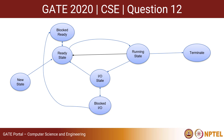After executing for a particular time quantum in the running state — say about 2 or 3 seconds — the process is taken back to the ready state, and another process is taken from the ready state to the running state. This diagram depicts the working of preemptive scheduling. In non-preemptive scheduling, there is no process flow between the running state and the ready state, whereas in preemptive scheduling, the process can be taken from the running state back to the ready state and vice versa.